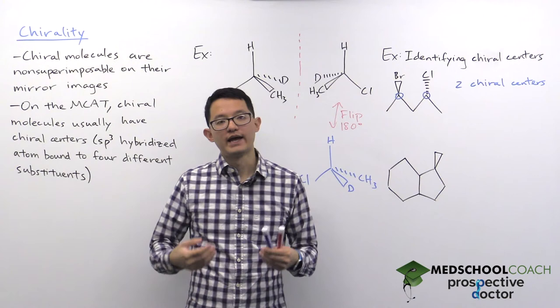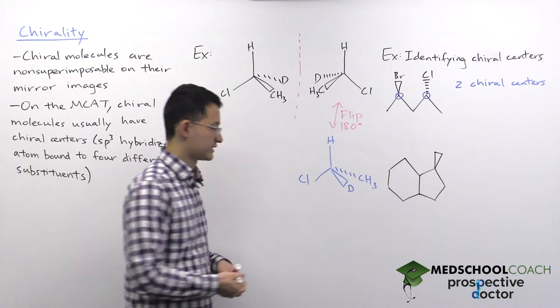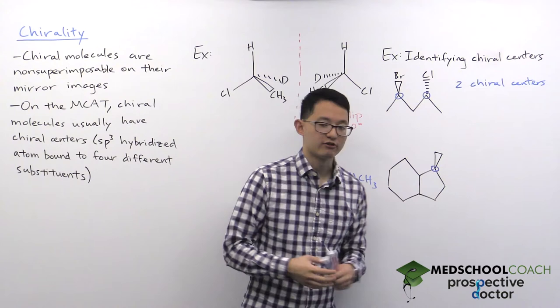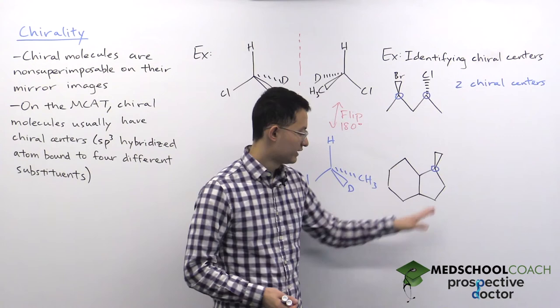And what helps is that often when you're looking at these structures, you can look for atoms with wedges and dashes—those are often going to be chiral centers. However, let's take a look at this molecule right here. If we're looking for wedges and dashes, we can quickly find this atom right here, which indeed is a chiral center. It's bound to a hydrogen, a methyl group, and two different parts of this organic molecule.